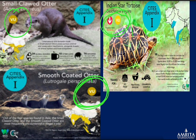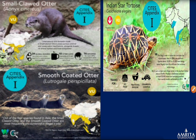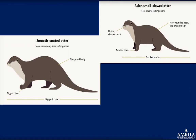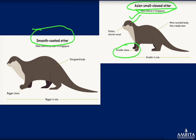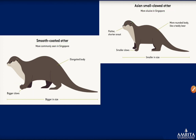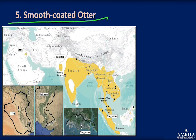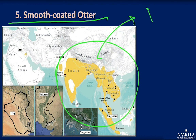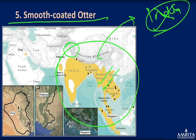Now the difference between the two otters: the Asian Small-clawed Otter has small claws, while the Smooth-coated Otter has bigger, smoother claws, an elongated body, and is larger in size. For the Smooth-coated Otter, remember that it is not specific to India — it is also found in other countries including Iran, Pakistan, and Singapore, but is not found in north India.